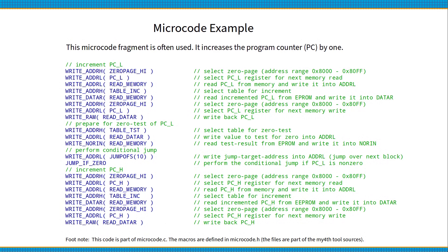Here is an example of what the microcode looks like. The fragment shown here increments the program counter. As you can see, the microcode is very complex and many clock cycles are required for relatively simple operations.